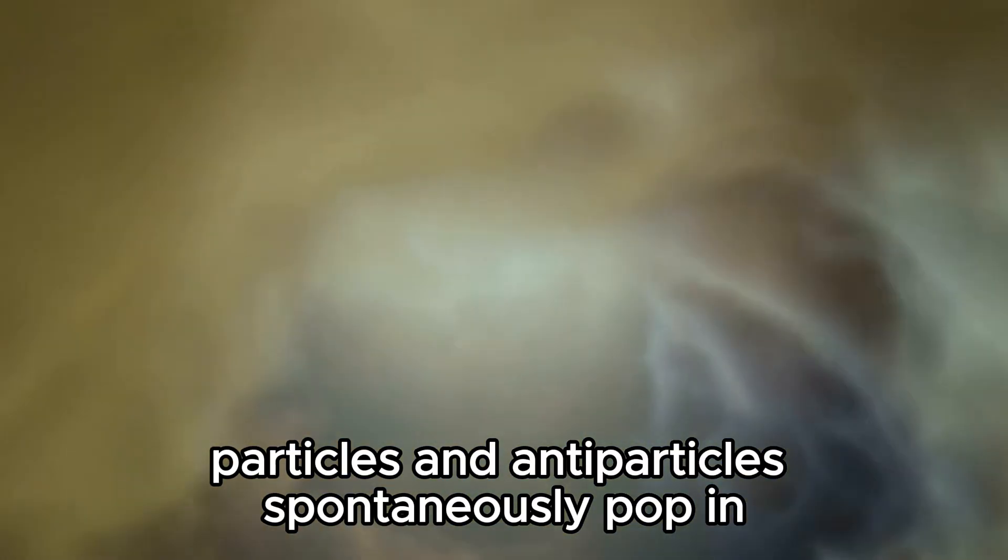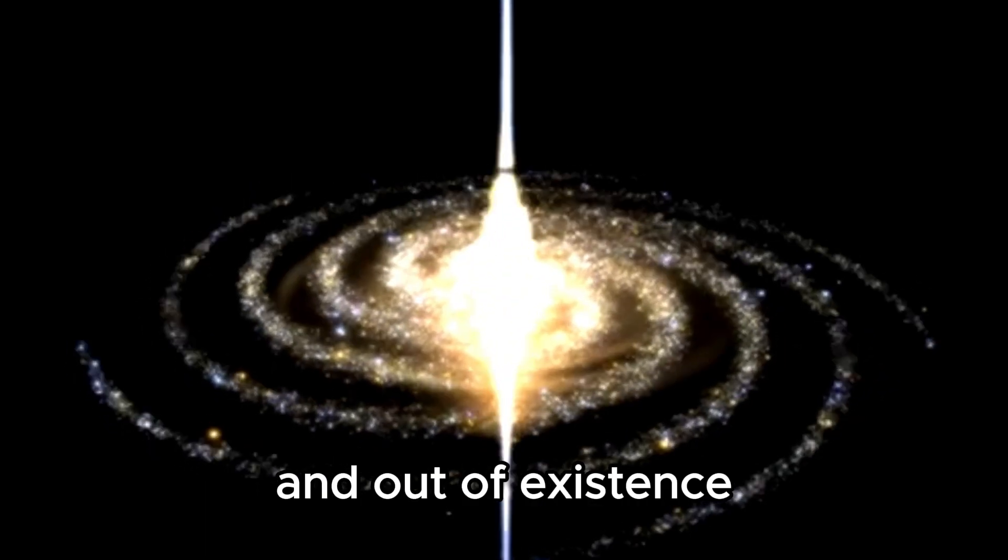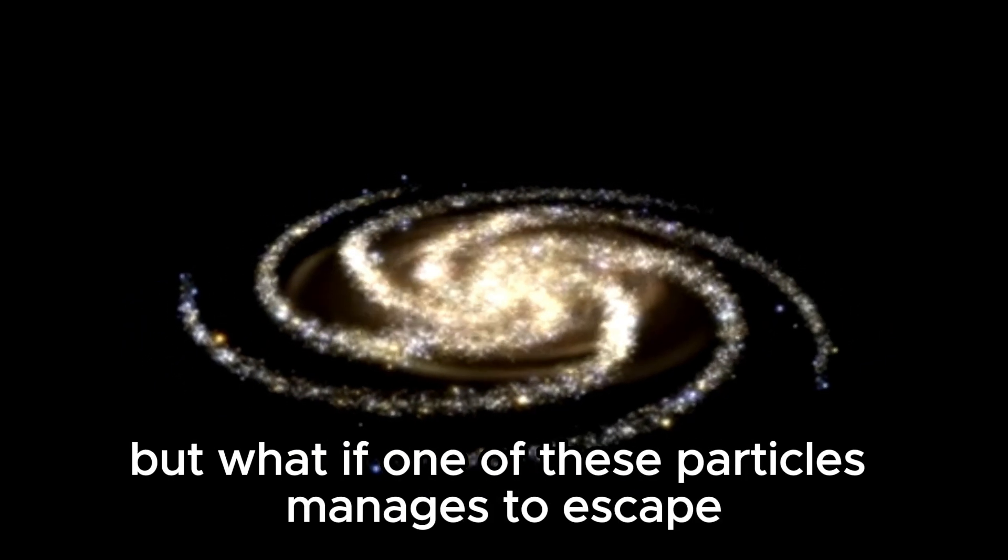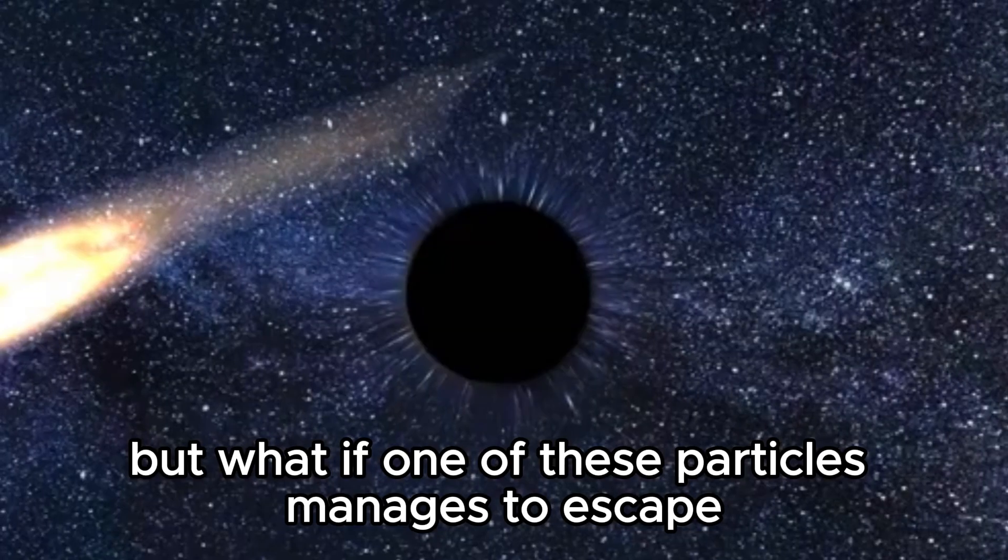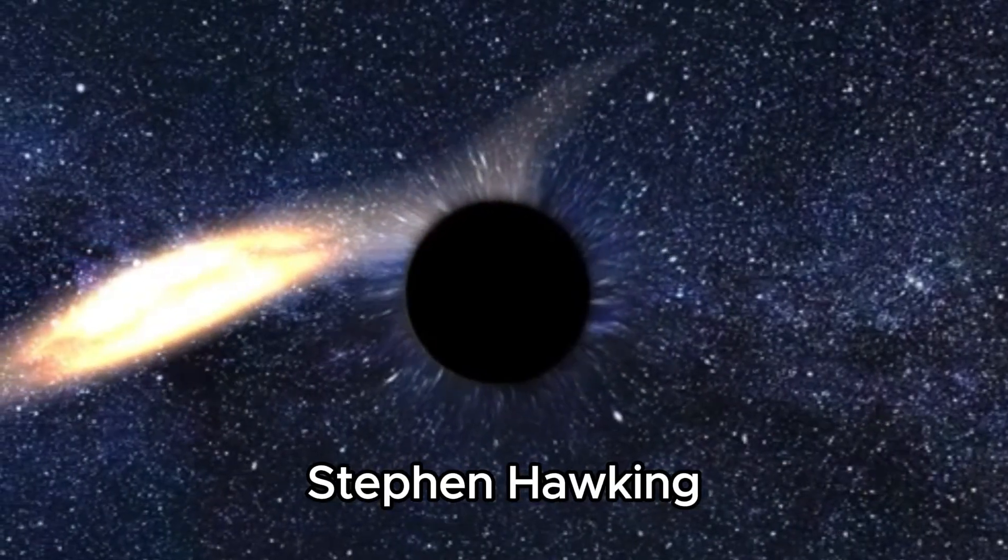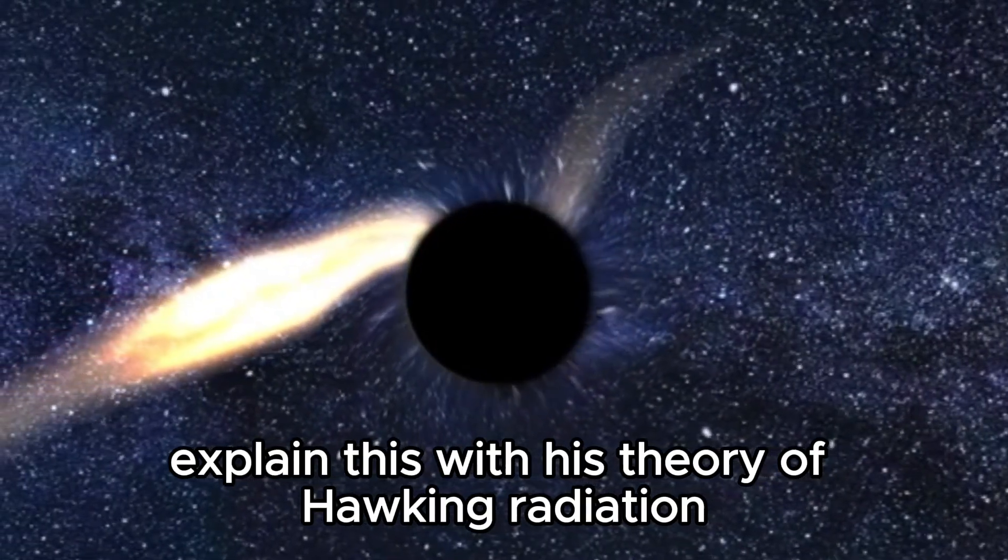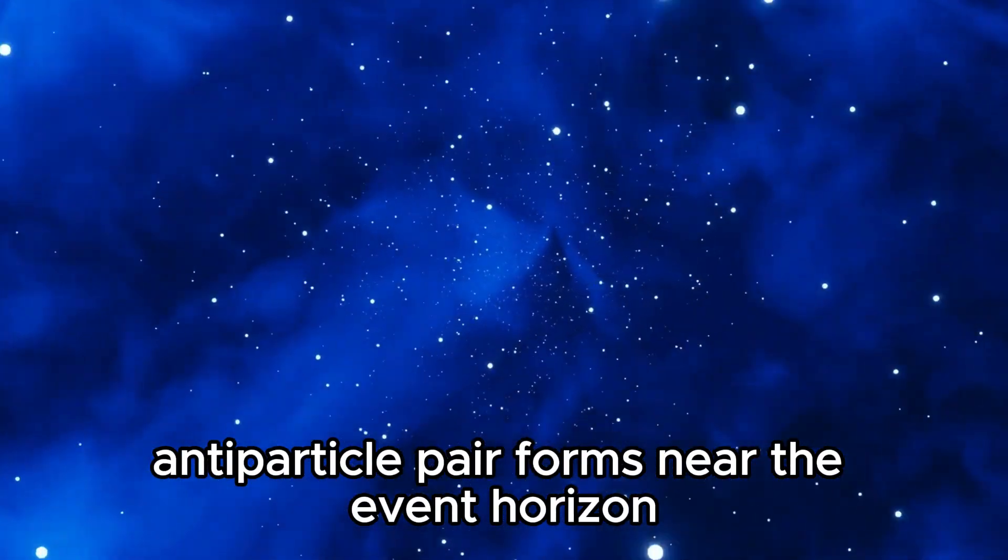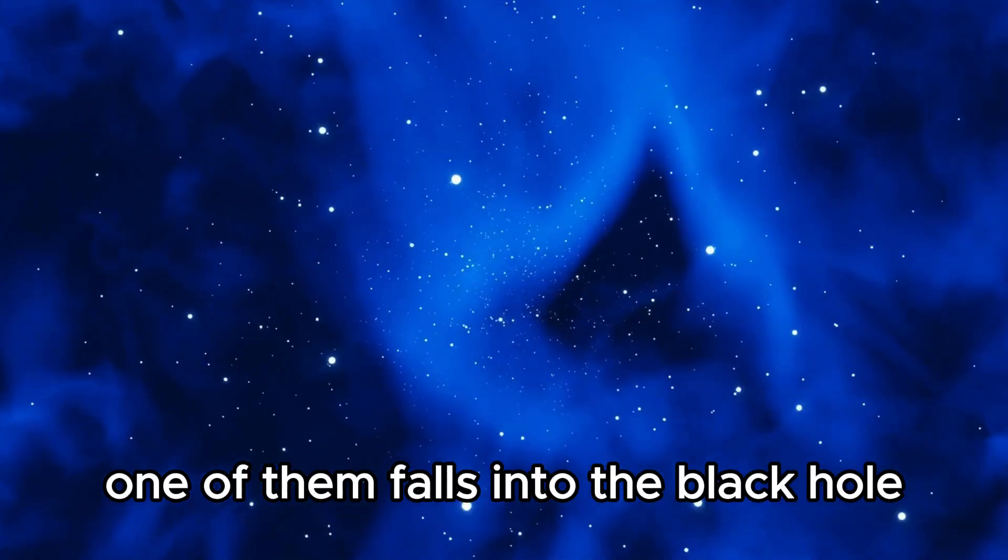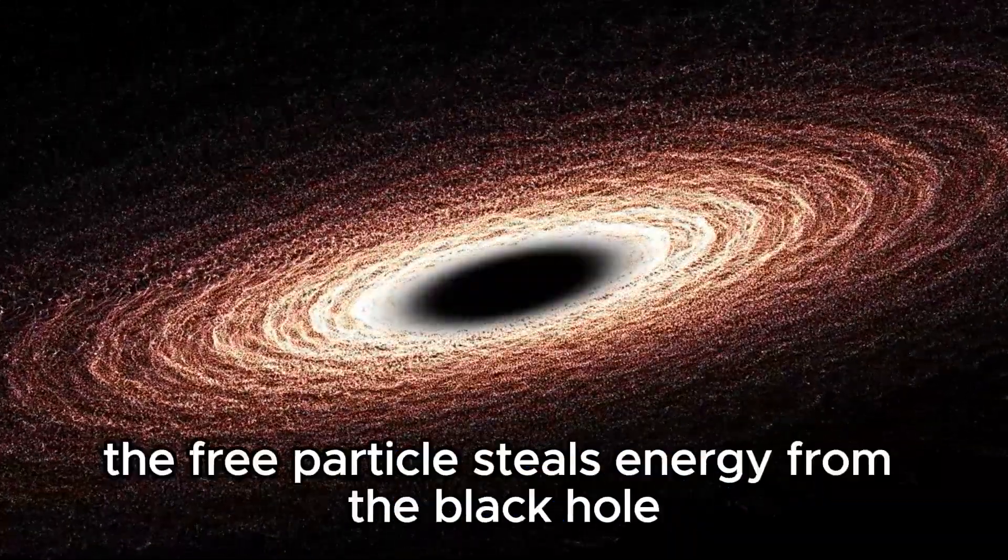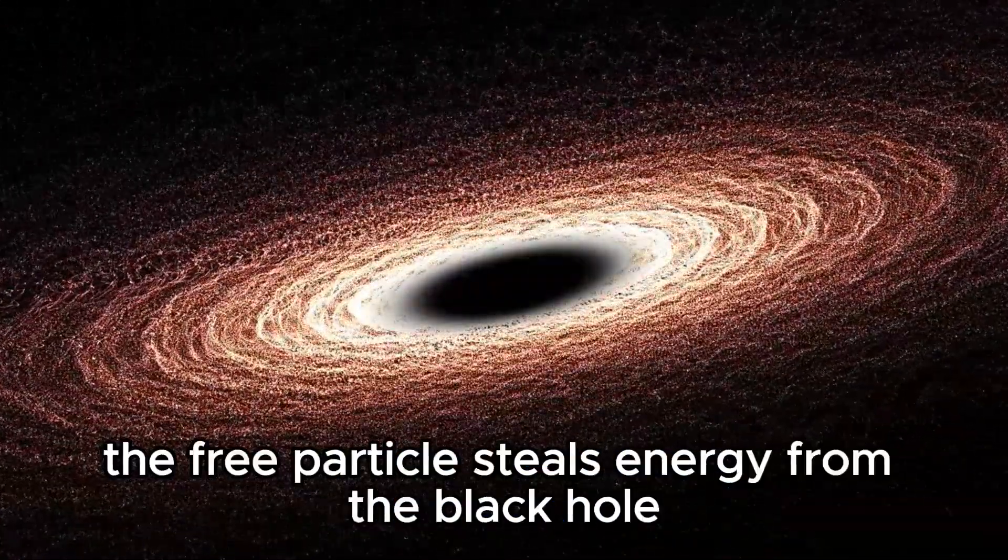Near an event horizon, particles and antiparticles spontaneously pop in and out of existence, annihilating one another almost instantly. But what if one of these particles manages to escape the stronghold of a black hole? The late, great Stephen Hawking explained this with his theory of Hawking radiation. When a particle-antiparticle pair forms near the event horizon, one of them falls into the black hole while the other one escapes. And by doing so, the free particle steals energy from the black hole.